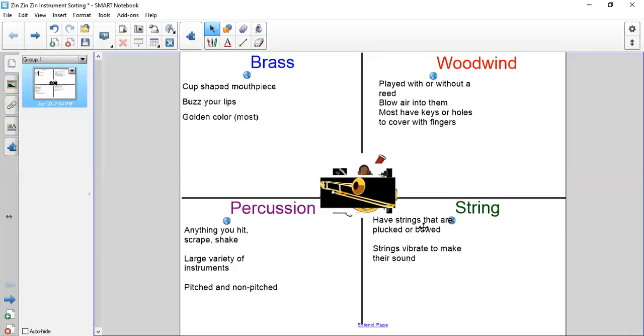String instruments have strings on them that are either plucked with your fingers or bowed with a bow that has hair on it made out of horse hair. Their strings vibrate when they're rubbed or plucked to make their sound.